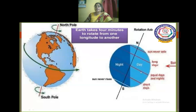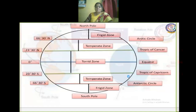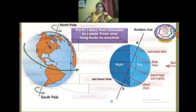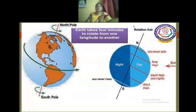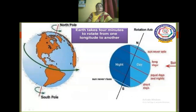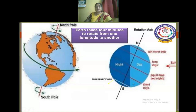Night occurs in the west and day in the east because the sun rises in the east. You can see that the sun's rays are received by the easternmost countries first, and the western countries receive the setting sun. The sun never rises in the west — east is the direction from which the sun rises.